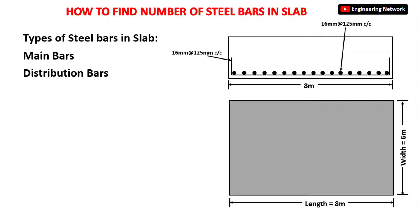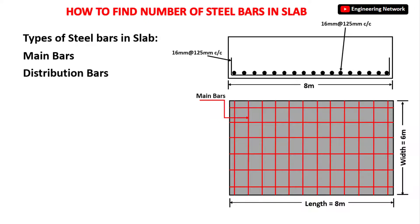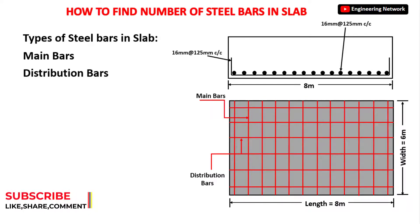Now what are main bars and what are distribution bars? Main bars are those bars which are placed along the length of the slab, and distribution bars are those bars which are placed along the width of the slab. If you look at this RCC slab right here, this is the length of the slab, so main bars will be placed in this direction. And this is the width of the slab, so distribution bars will be placed along this direction.